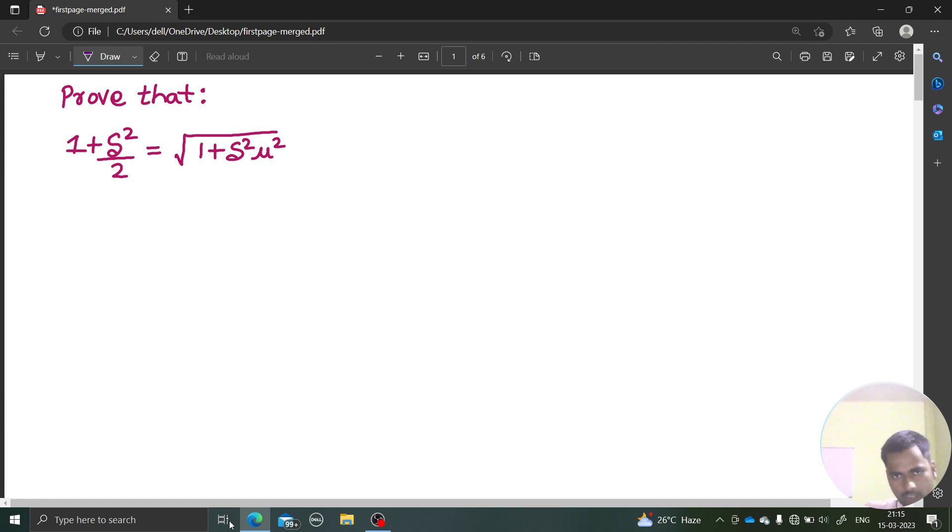I am writing both of those relations. Delta is e power half minus e power minus half, and your mu is e power half plus e power minus half divided by 2. Once you know these two relations, you can easily start off.